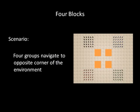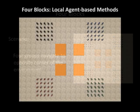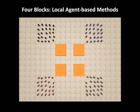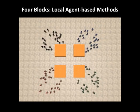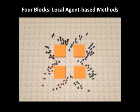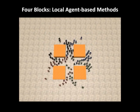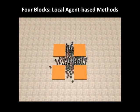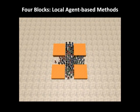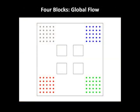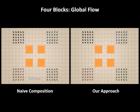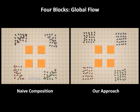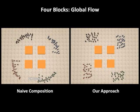This scenario is comprised of four groups of 25 agents in each corner of the environment, whose goals lie in the opposite corner. In the middle, there are four square obstacles that form narrow passageways. Traditional agent-based models, which plan for each agent independently, lead to congestion in the center of the environment. To resolve the problems with the earlier simulation, the user specifies a single, global, circular flow that guides the agents to their respective goals.